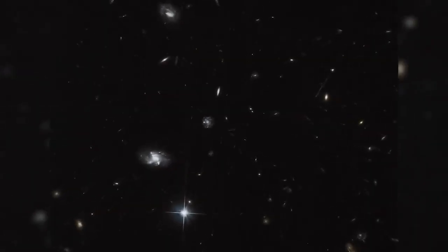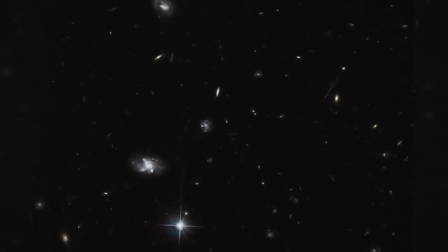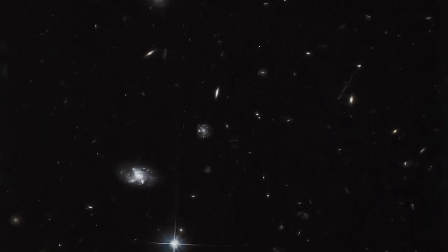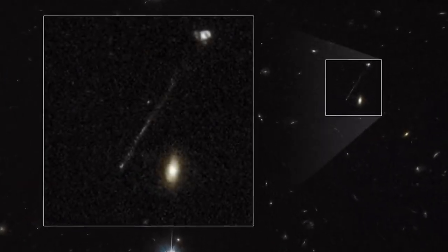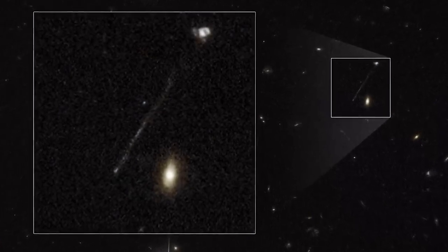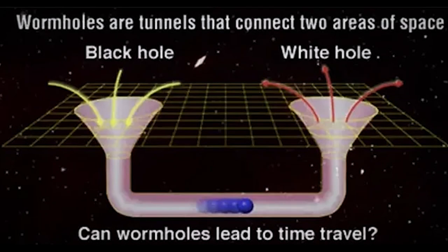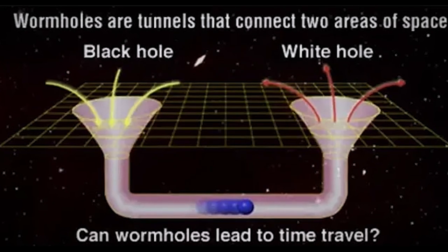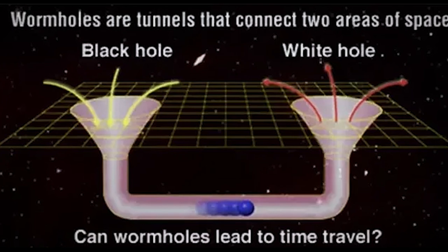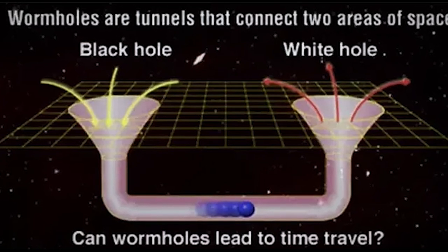While black holes captivate our imagination with their immense gravitational pull and ability to devour everything in their path, white holes present a perplexing and enigmatic counterpart. Often described as a time reversal of black holes, white holes are considered a reflection of the reverse of a bouncing ball, a cosmic region that defies our understanding of space and time.